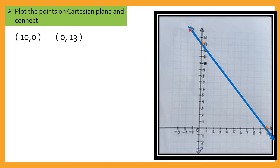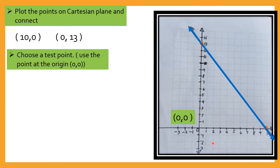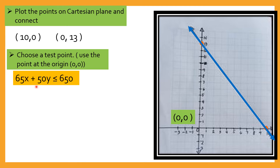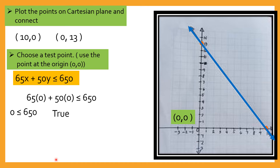Saan part ngayon ng plane? Di ba ang graph ng inequality ay half plane — saan ba, dito ba, o dito? Now, magkakaroon tayo ng test point, at gagamitin natin ang origin para malalaman natin kung saan makikita yung solution natin. So (0, 0) ang test point natin — isasubstitute lang natin yung x=0 and y=0 sa ating original na inequality. So 65x plus 50y is less than or equal to 650 — replacing x and y with 0, we get 0 is less than 650, which is true.